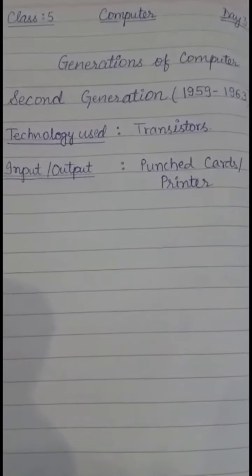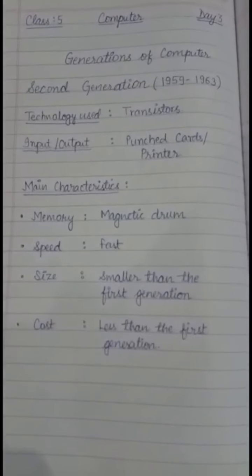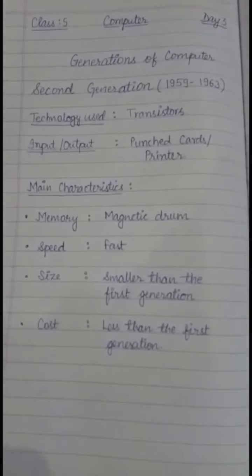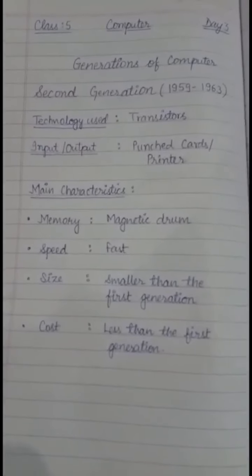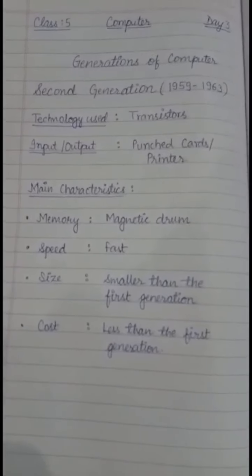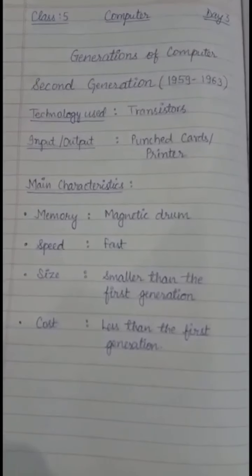Now moving on to the main characteristics of second generation computers. The memory used in second generation computers was magnetic drum. The speed of the second generation computer was fast and it all was because of transistors.